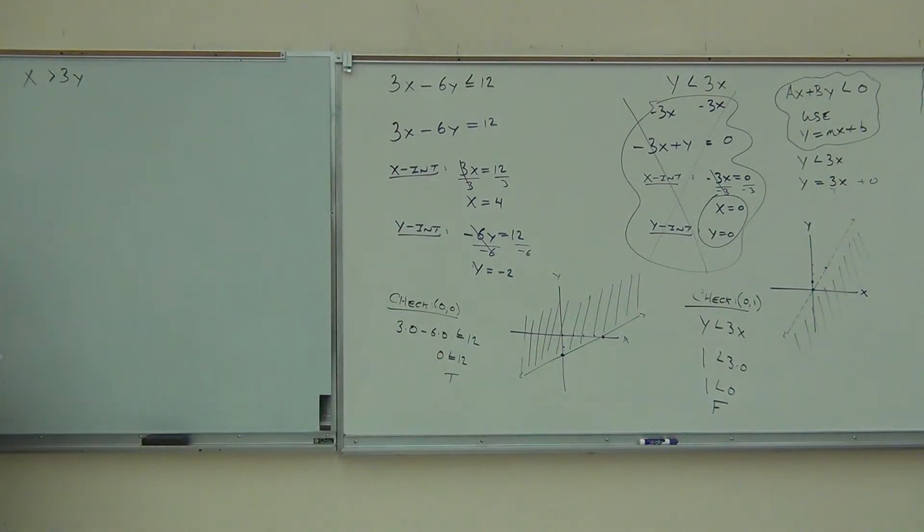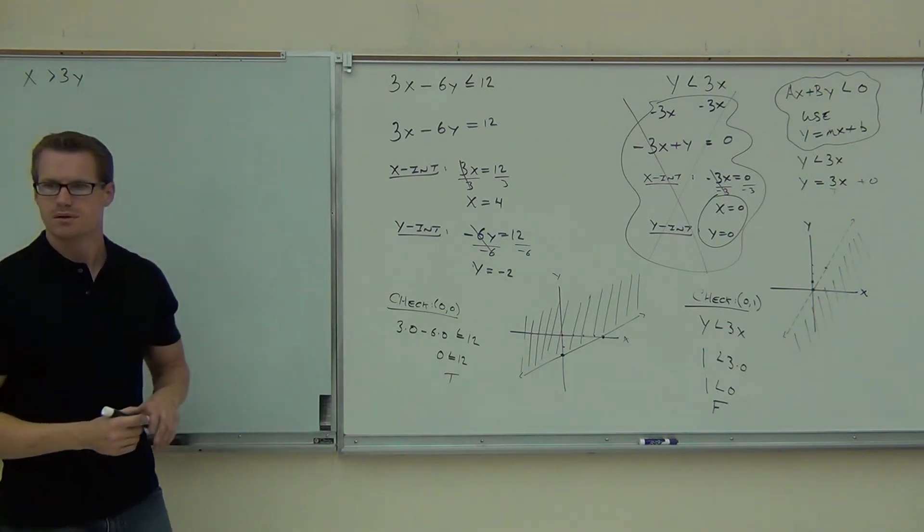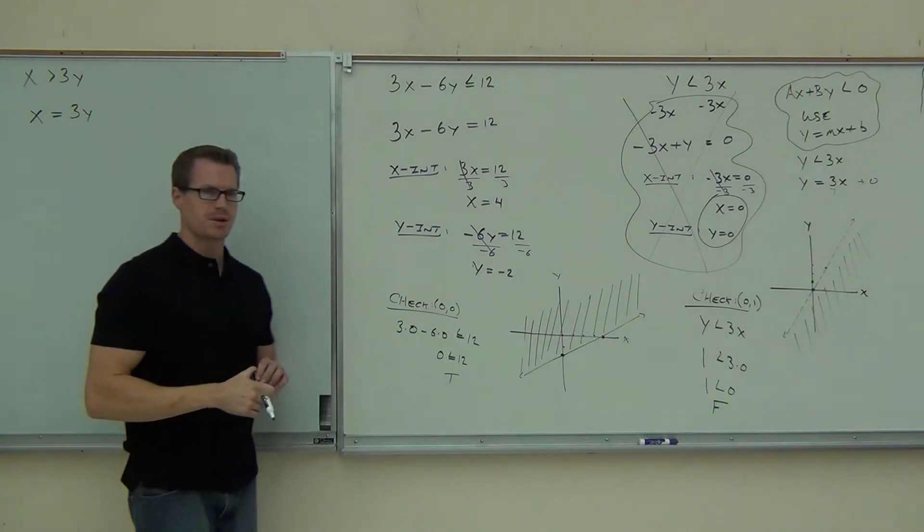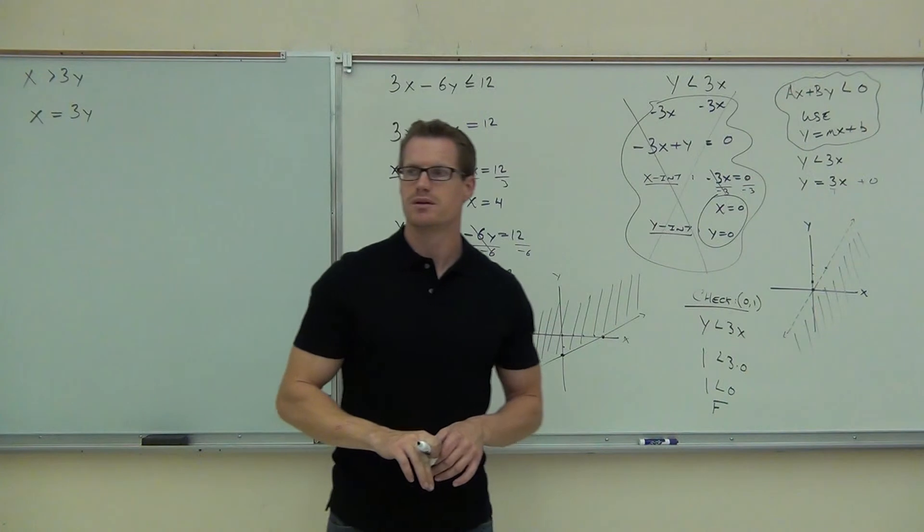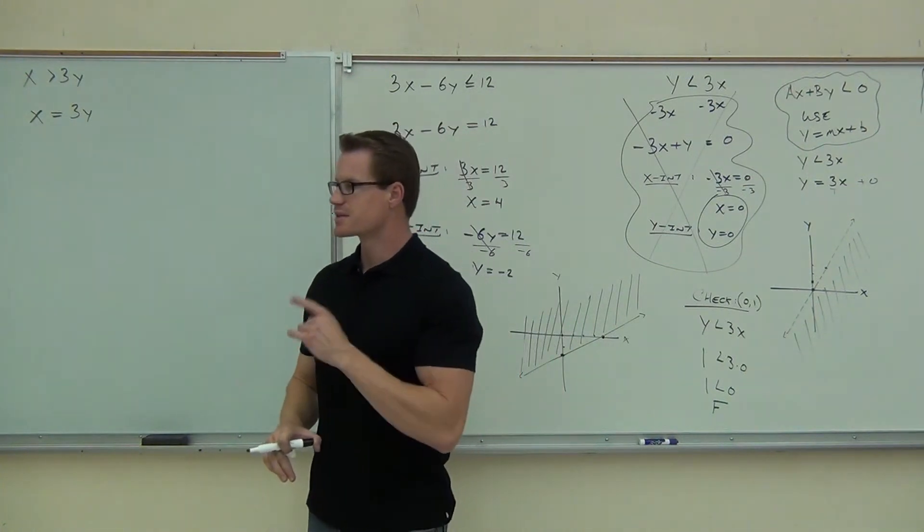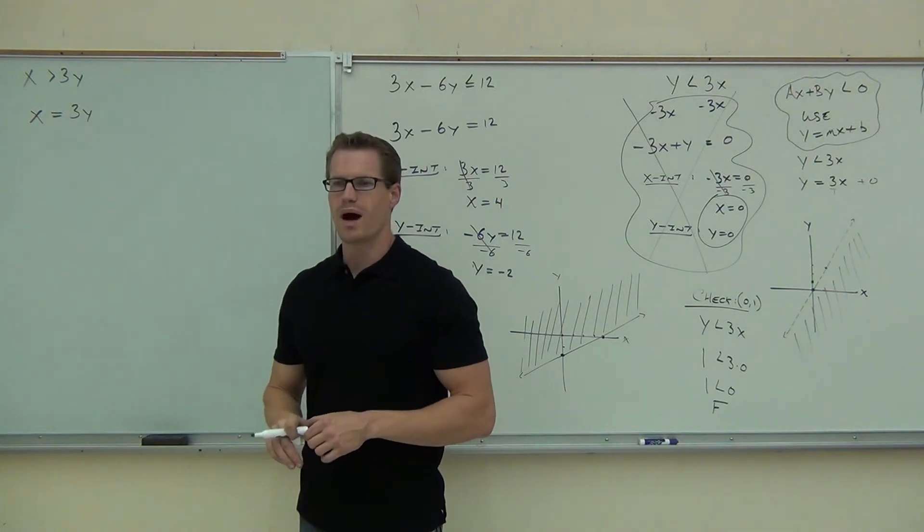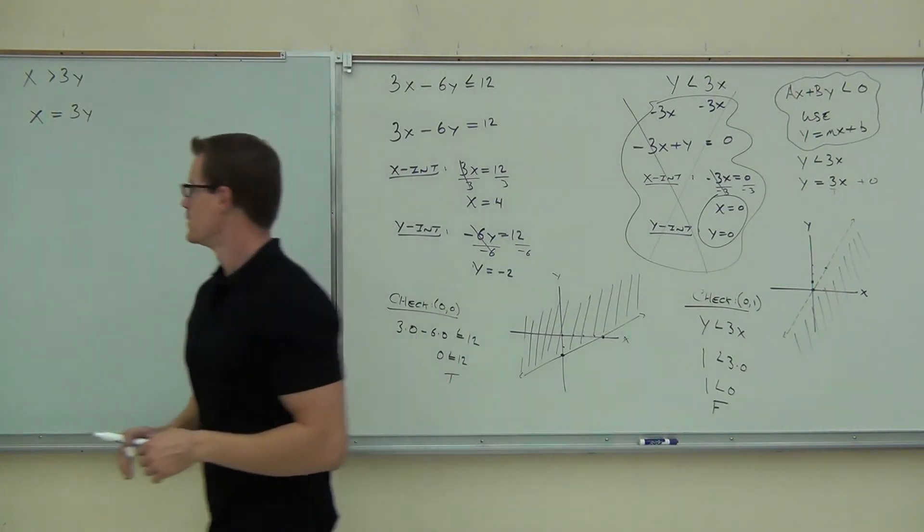If this isn't the intercept method, what are we going to do? Slope intercept. So we're going to temporarily set this equal to zero. I'm sorry. Set the inequality as an equal sign. And somehow manipulate that until you get slope intercept form. Is this in slope intercept form? No. I need a y by itself in order to get slope intercept form. How do I do that?